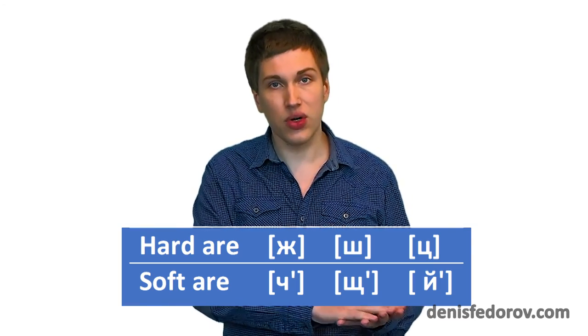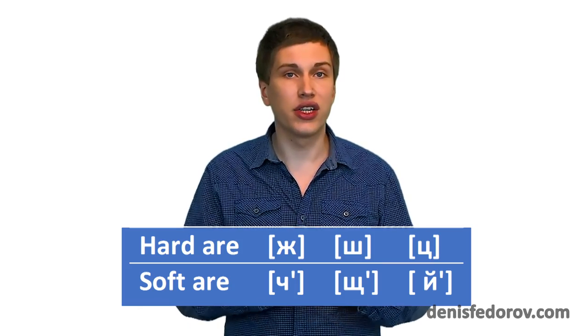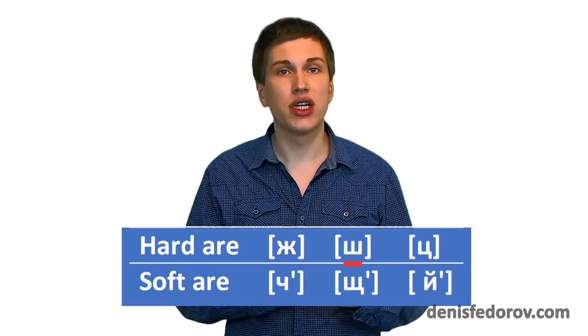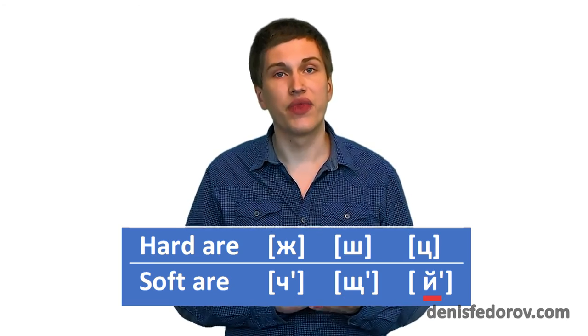6 sounds have no pairs. They can be either soft or hard by default and cannot be changed. Hard are Ж, Ш, Ц. Soft are Ч, Щ, Й.